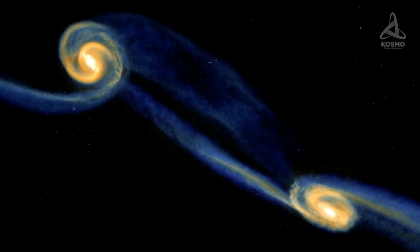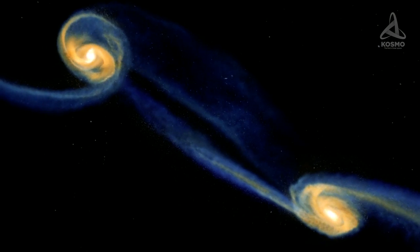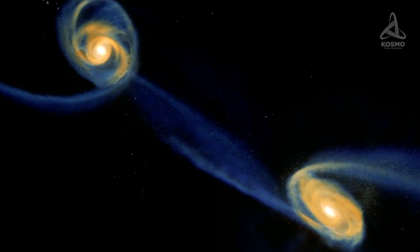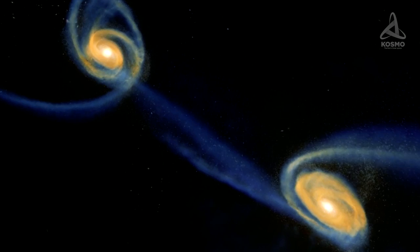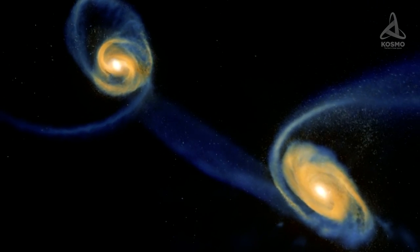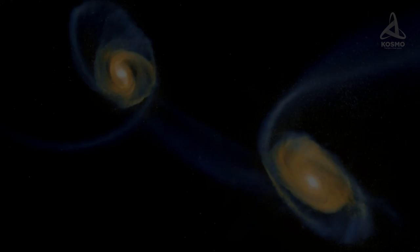Admittedly, it would take a combination of a number of mutually independent factors for such a fascinating and well-defined structure to form. For example, the progenitor galaxies would have moved at specific velocities and come together at a certain angle. The odds of a success would have been minuscule.